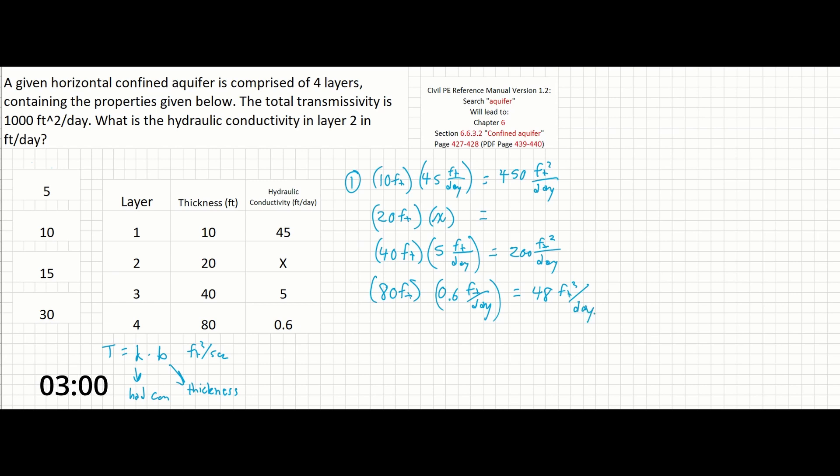So next we have our subtraction so we have 1000 feet squared per day minus the sum of 1, 3, and 4. So 450 plus 200 plus 48 feet squared per day. And this gives us 302 feet squared per day.